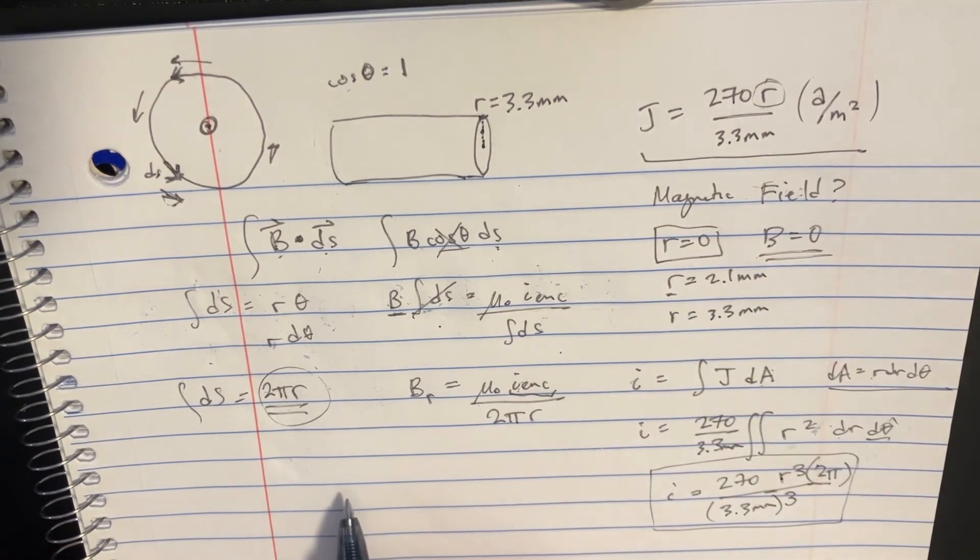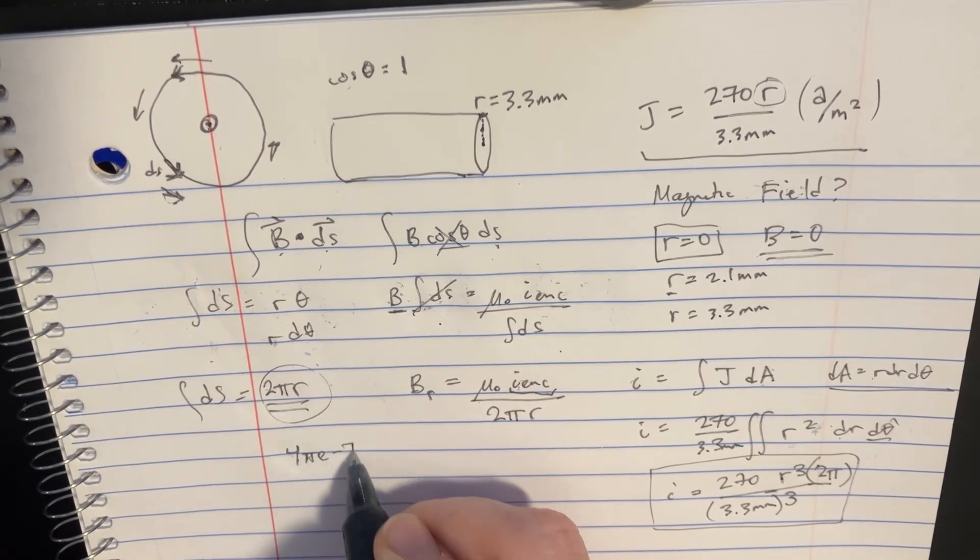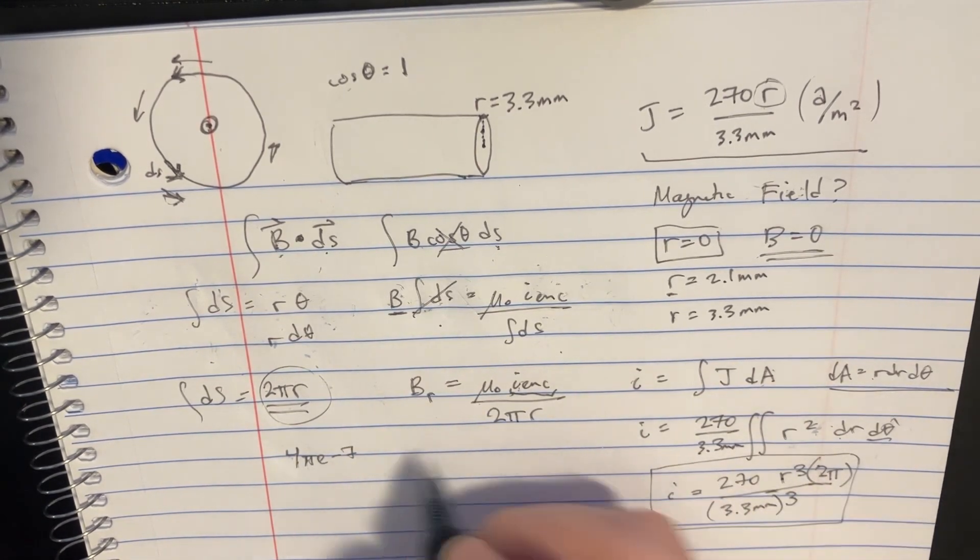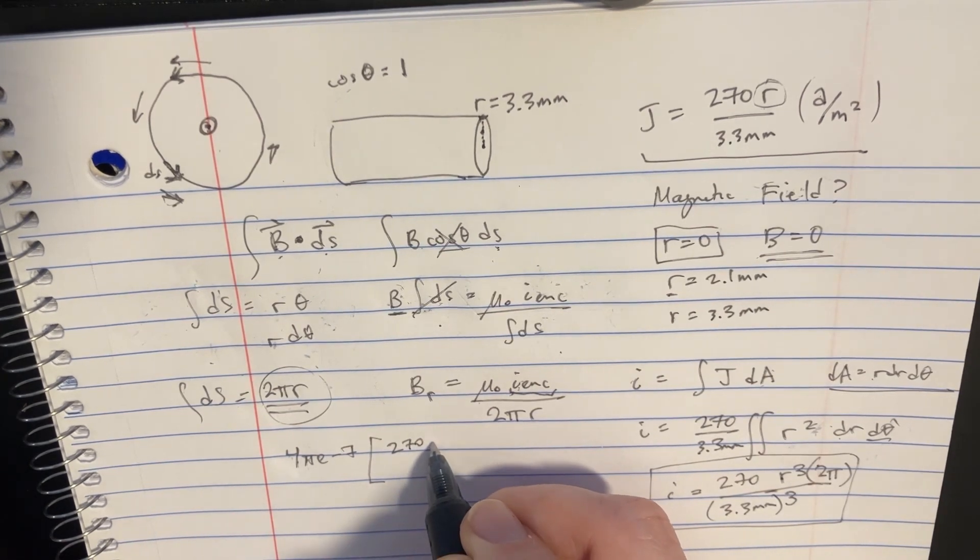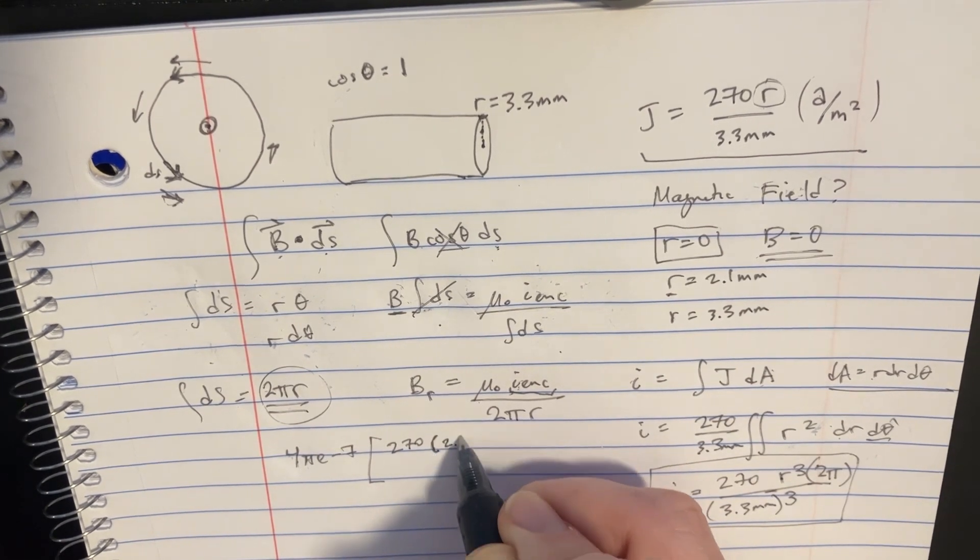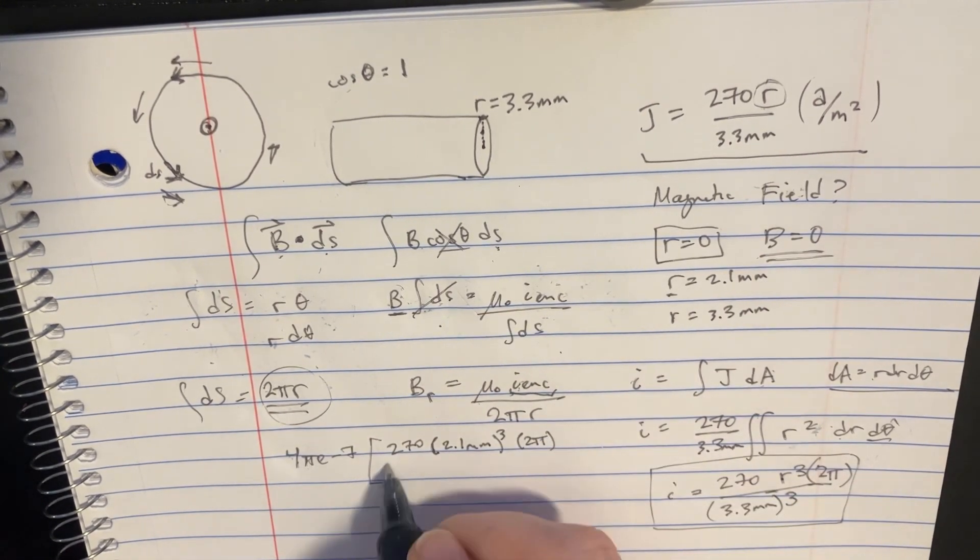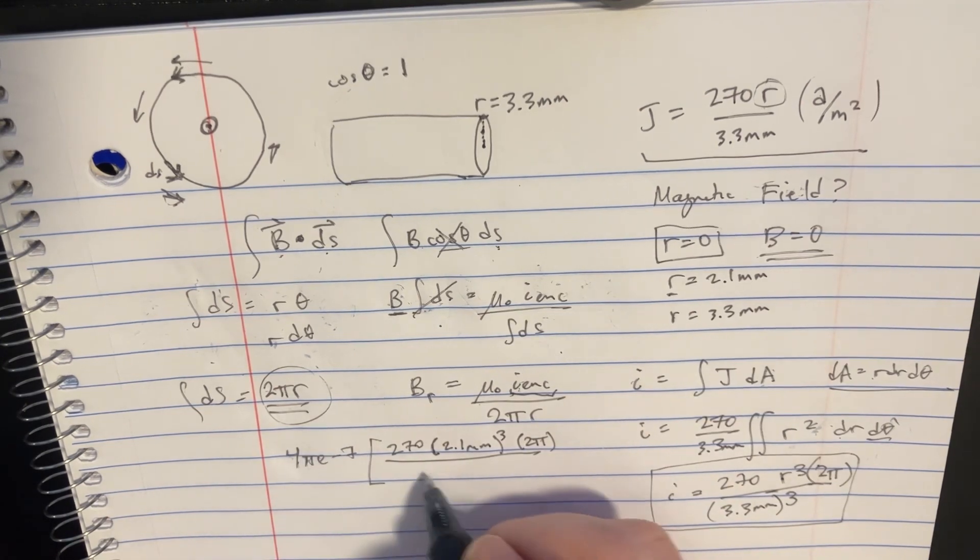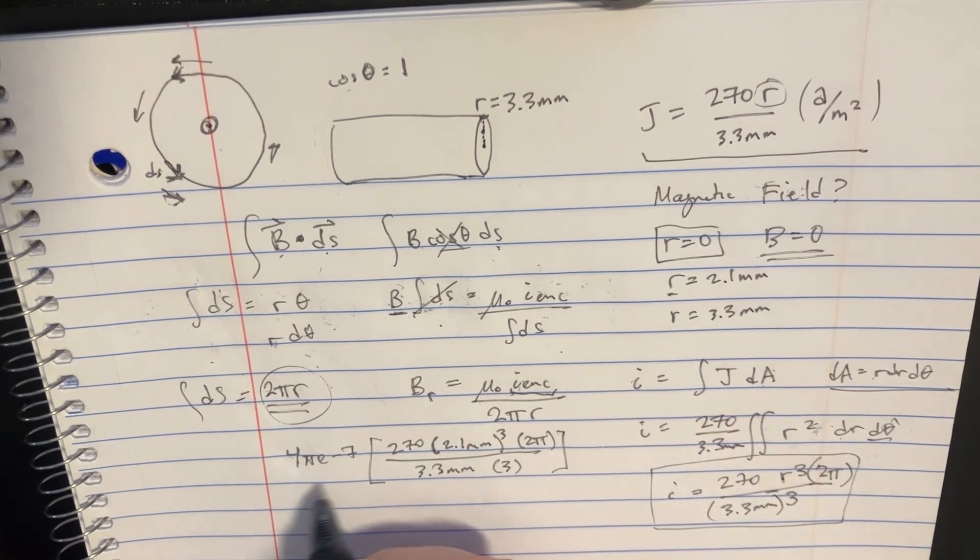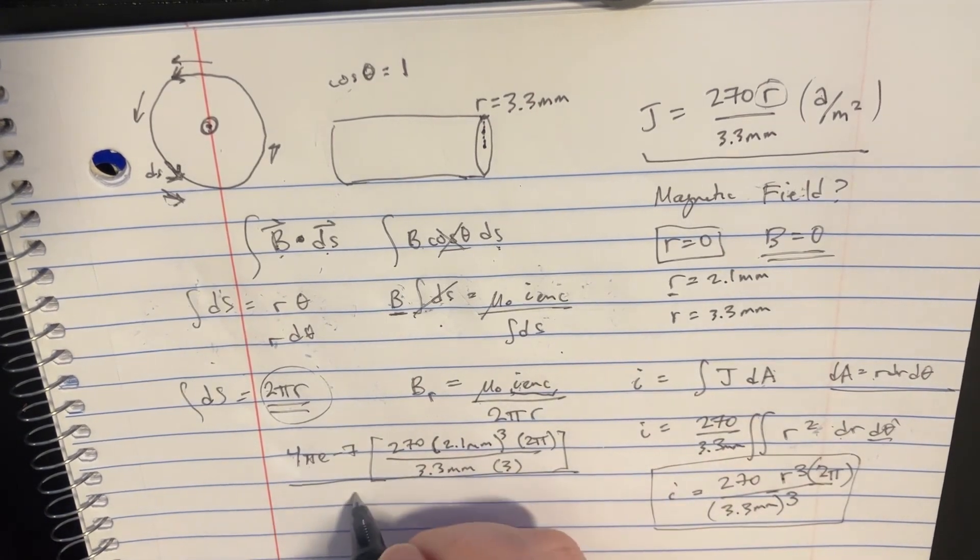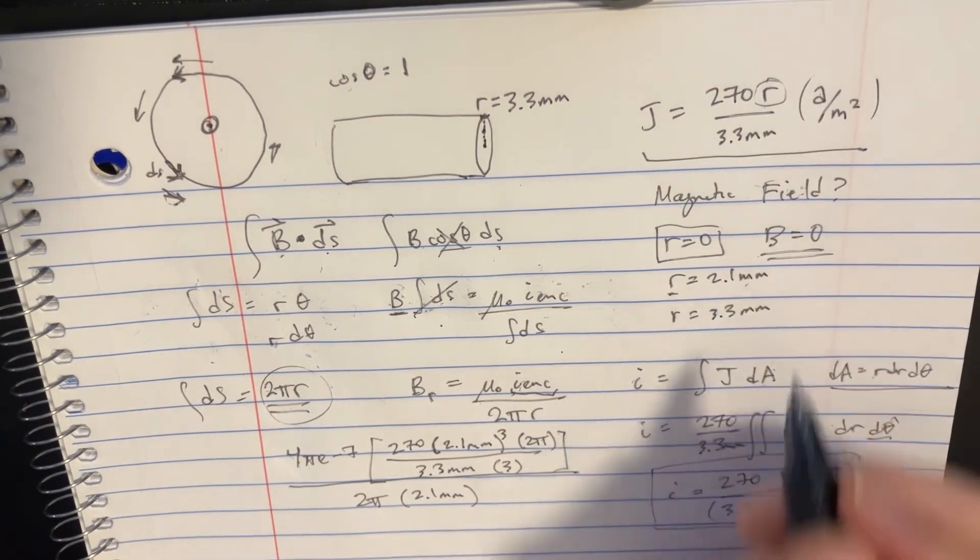And now for the second one, at 2.1 millimeters, we can use the equation. So we use 4 pi times 10 to the negative 7. And then the i enclosed is going to be like 270. This is going to be 2.1 millimeters to the third. And then there's a 2 pi. And then we're going to divide that by 3.3 millimeters. And multiply that by 3 over there.